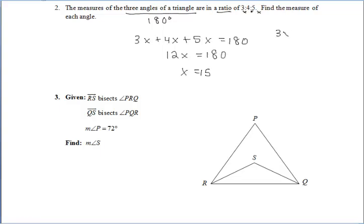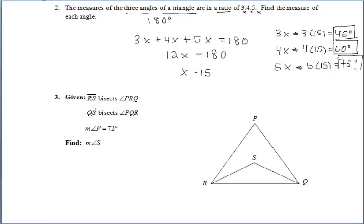We get that x is 15, but keep in mind we want to find the measure of each angle. So from there, we could find the measure of each angle, substituting 15 in for x. The angles are 45 degrees, 60 degrees, and 75 degrees.